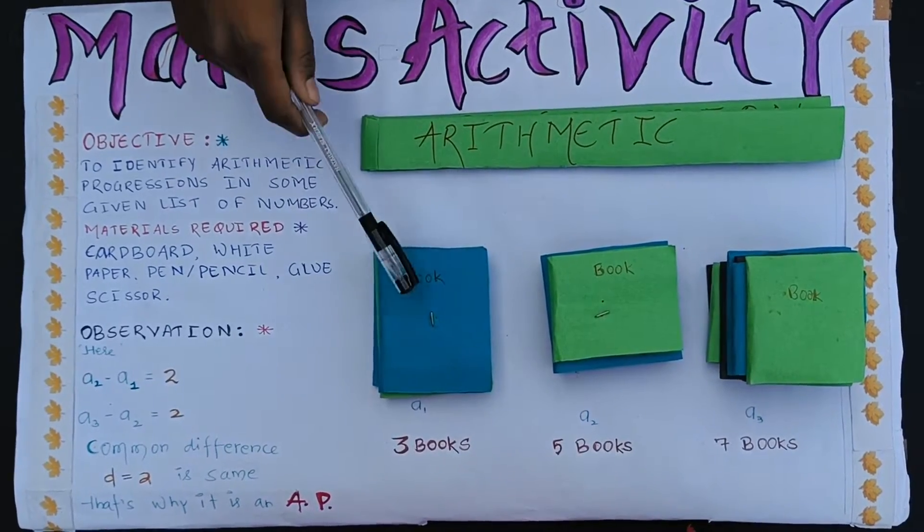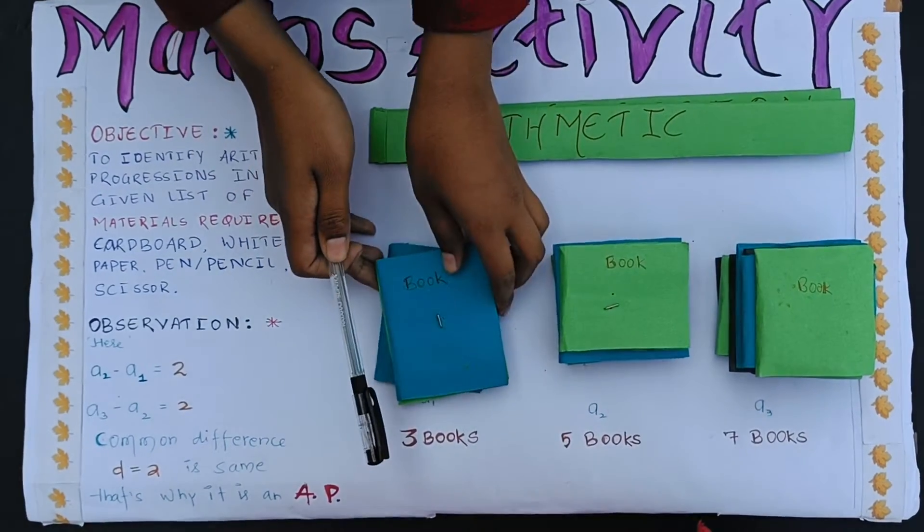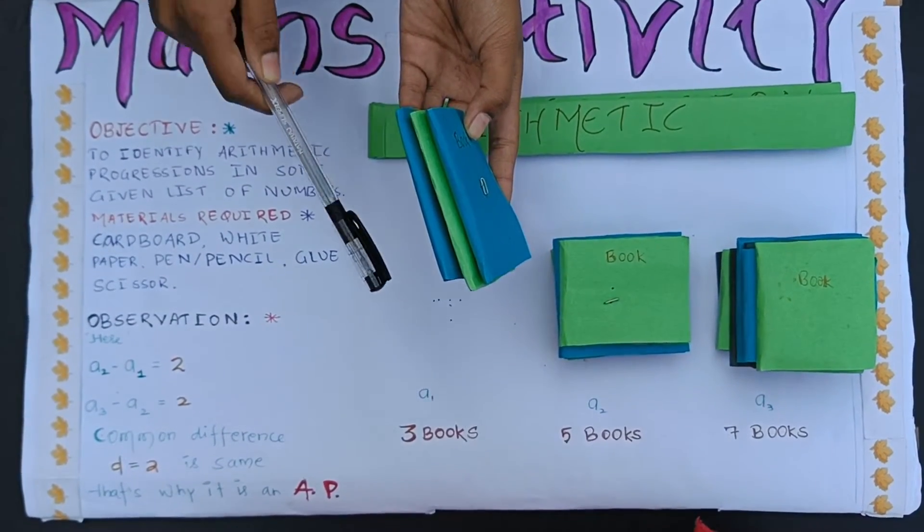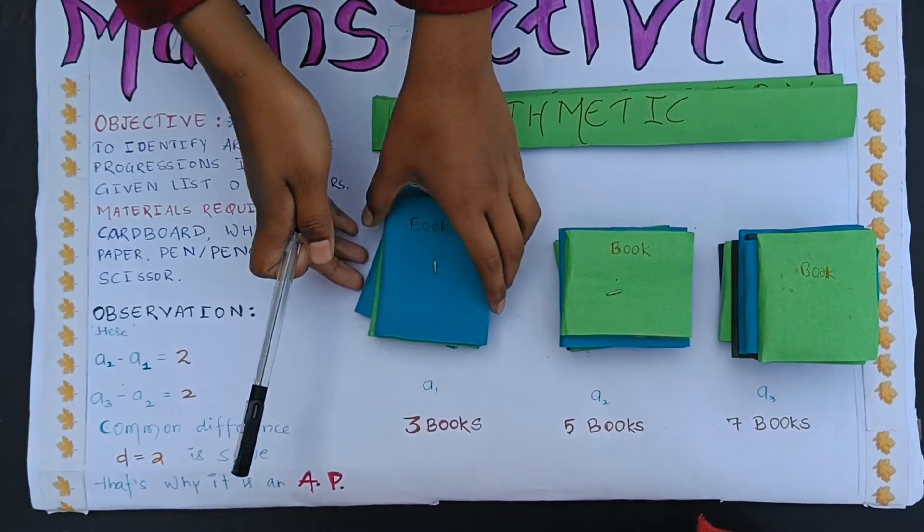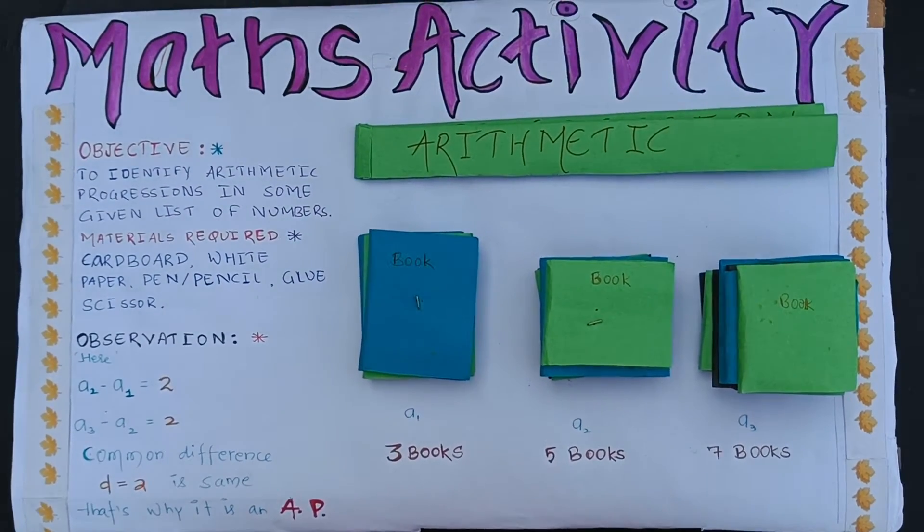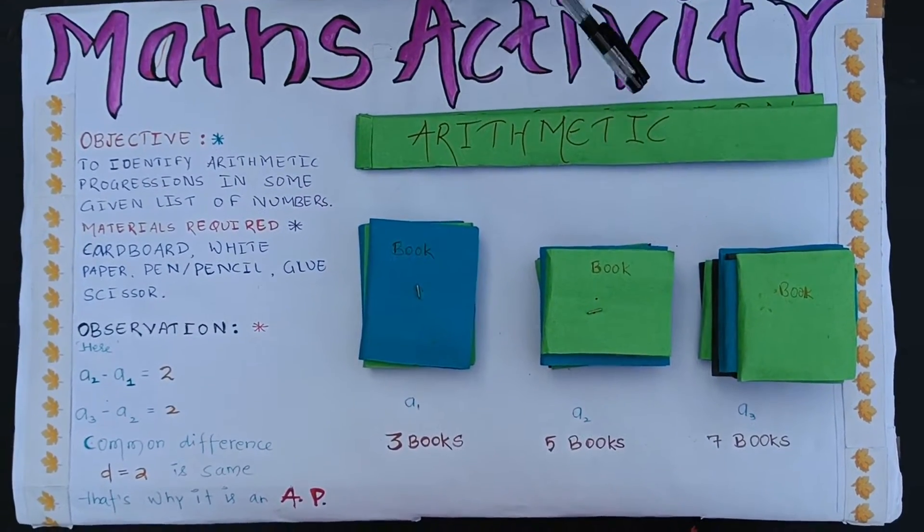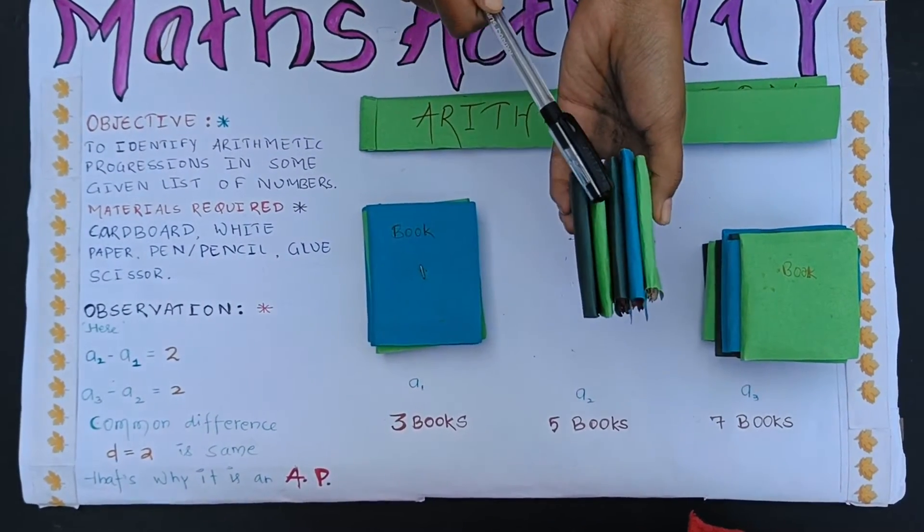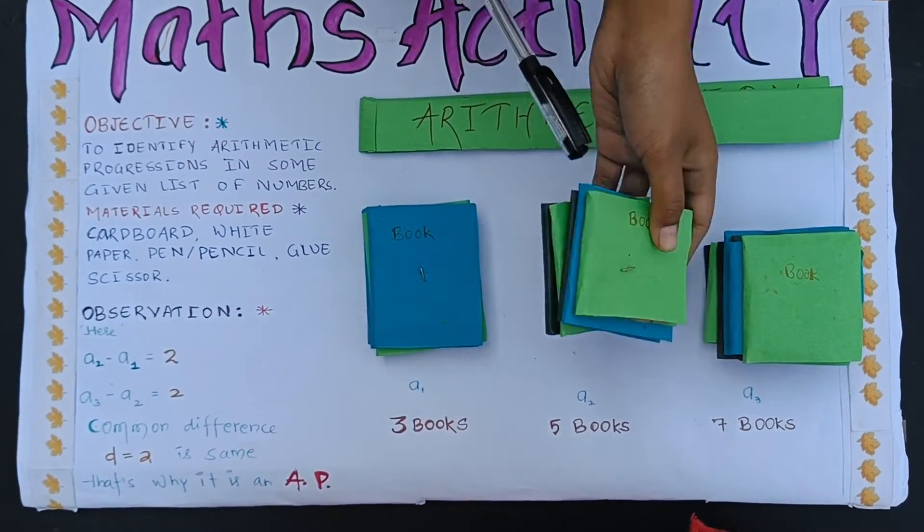Here we have taken three sets of books. In the first set, there are three books which is A1. In the second set, we have taken five books: 1, 2, 3, 4, 5, which is A2.